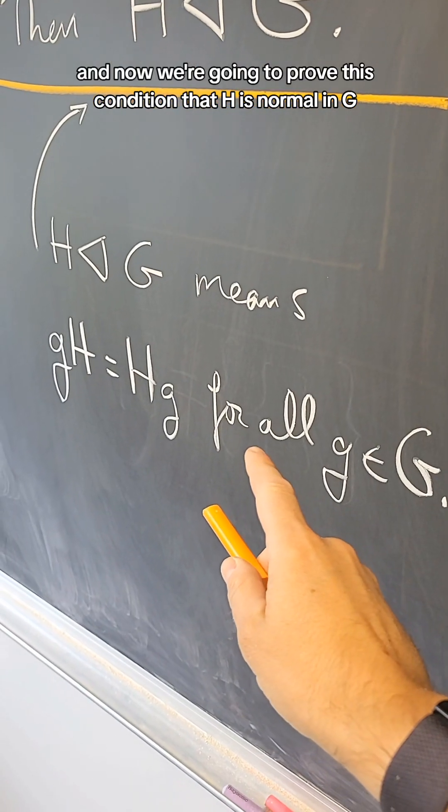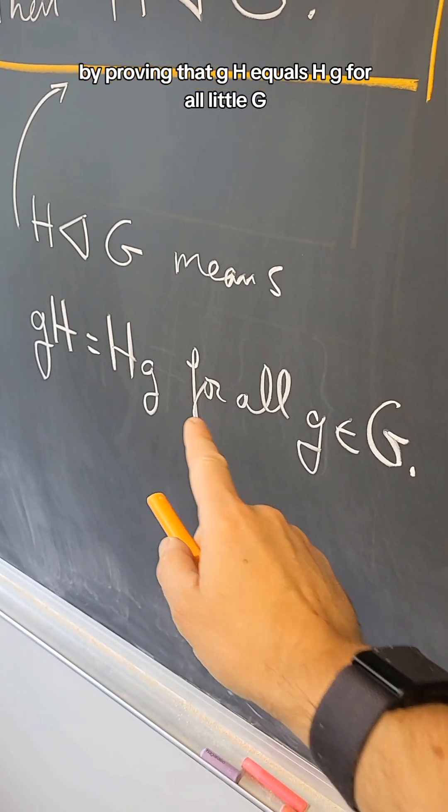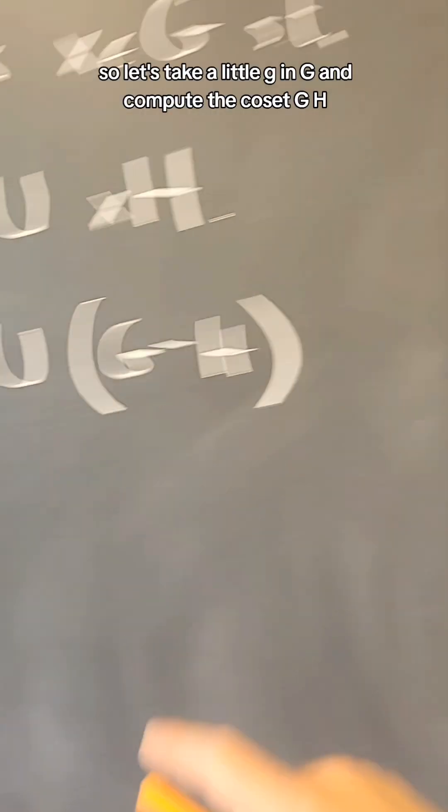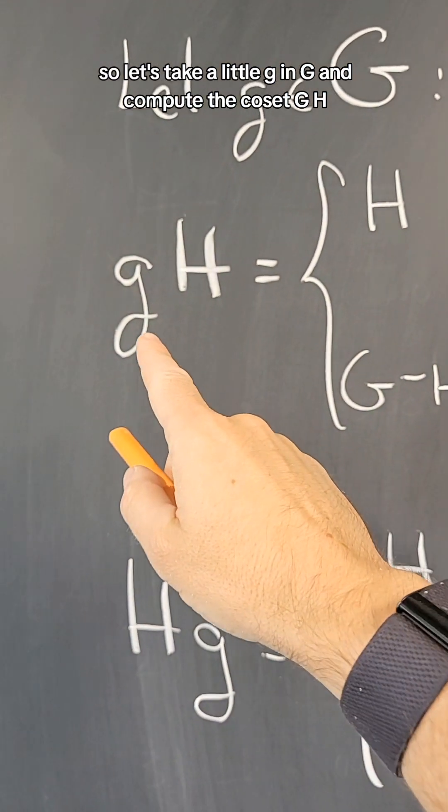And now we're going to prove this condition that H is normal in G by proving that gH equals Hg for all little g. So let's take a little g in G and compute the coset gH.